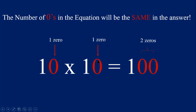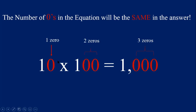Let's try 10 times 100. First, multiply the numbers that are not zero: 1 times 1 equals 1. Now count the zeros: there's one zero in 10 and two zeros in 100, so we have three zeros in the equation. We write three zeros after that first 1, giving us the answer of 1,000. 10 times 100 equals 1,000 — so simple! All we really need to know is 1 times 1.